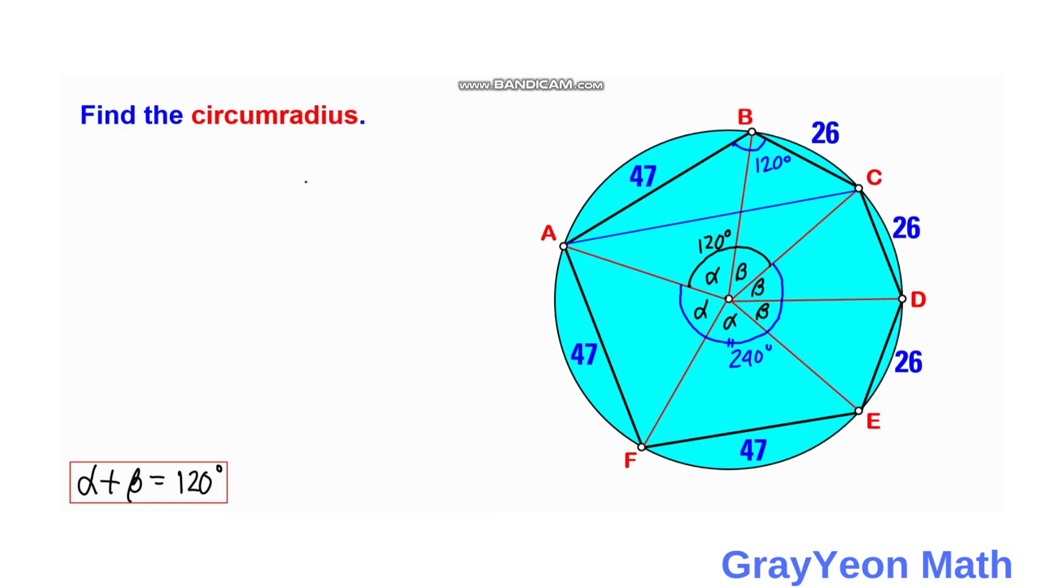Next, we focus on triangle ABC. We can use the law of cosines to find the unknown length AC. We are already given the lengths of AB and BC, and the included angle is 120 degrees.